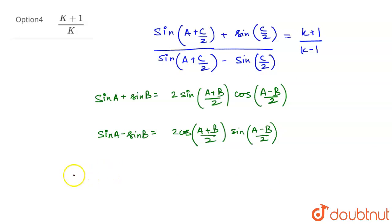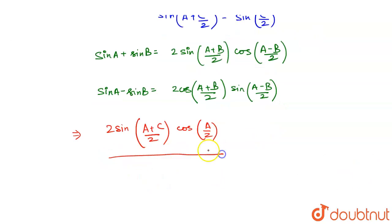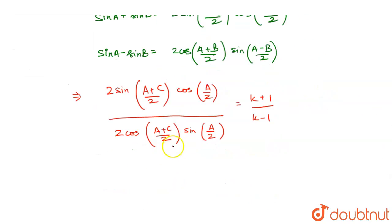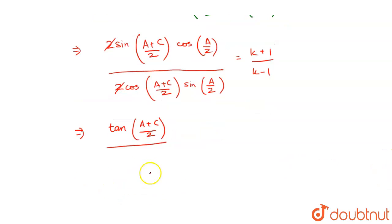Just apply the identity. This gives us 2 sine((a+c)/2) cos(a/2) in the numerator, upon 2 cos((a+c)/2) sine(a/2) in the denominator. This equals k plus 1 upon k minus 1. The 2s cancel, and we can see sine over cos and cos over sine, so this becomes tan((a+c)/2) upon tan(a/2), equal to (k+1)/(k-1).